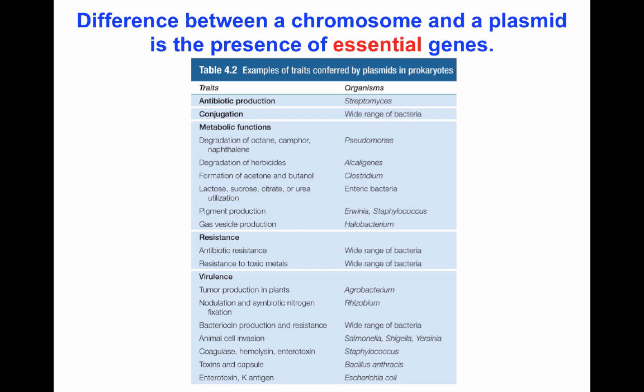For example, Streptomyces have antibiotic production genes in plasmids. Conjugation — the way microorganisms pass DNA from one organism to the next — happens through plasmids. Metabolic functions like degradation of herbicides, lactose, sucrose, urea utilization, pigment production, and gas vesicle production are all found in plasmids. Antibiotic and toxic metal resistance genes are found in plasmids, and many virulence genes allowing microorganisms to invade — whether in symbiotic or pathogenic infections — are also included in plasmids, including toxins.